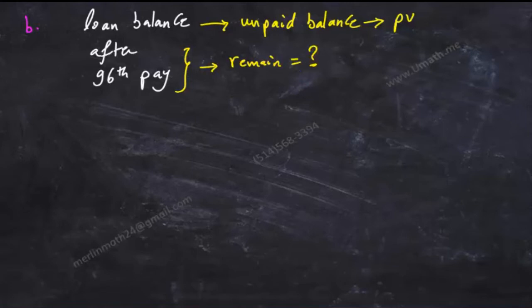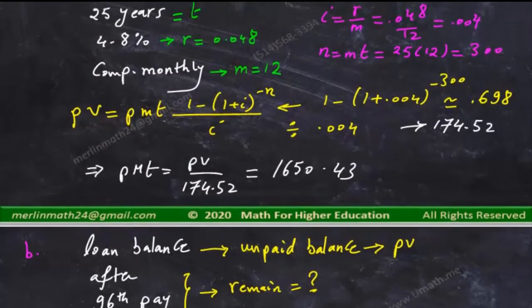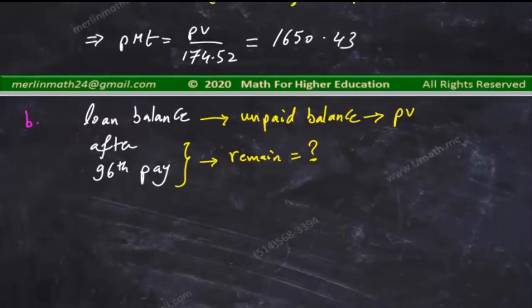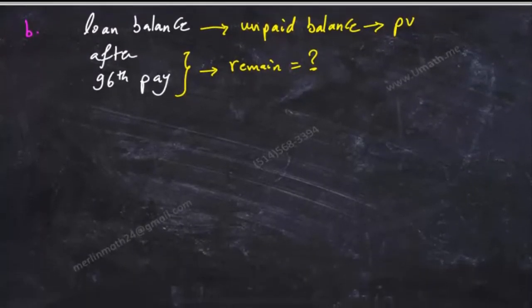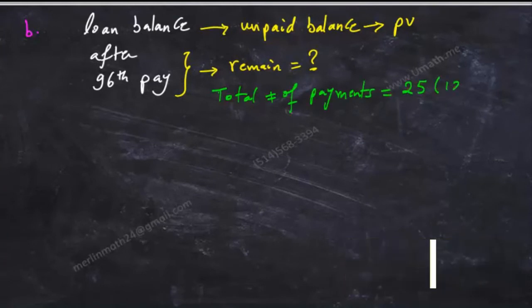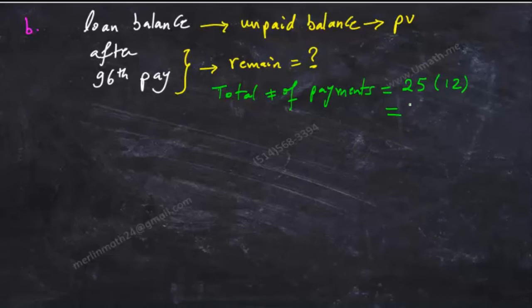360 if you have 30 years, but it is 25 years so it would be a subtraction from 300 payments, so we end by n equals 300 minus 96.